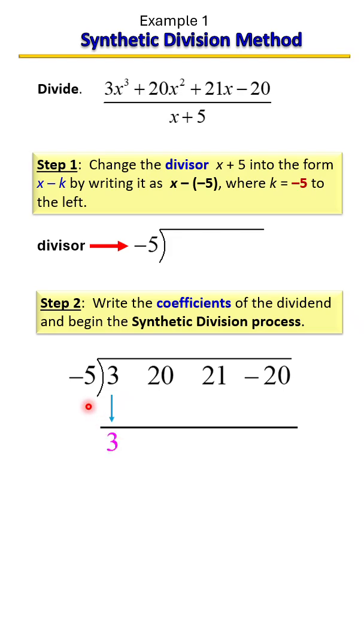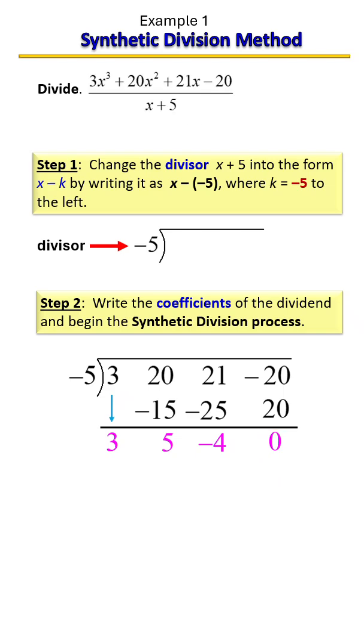Multiply that with the outside to get negative 15, bring down 5, multiply that with negative 5 to get negative 25, bring down negative 4, multiply that with negative 5 to get positive 20, bring down 0. Whatever number is at the end is your remainder, so we have a remainder of 0. Now synthetic division only gives you the coefficients.